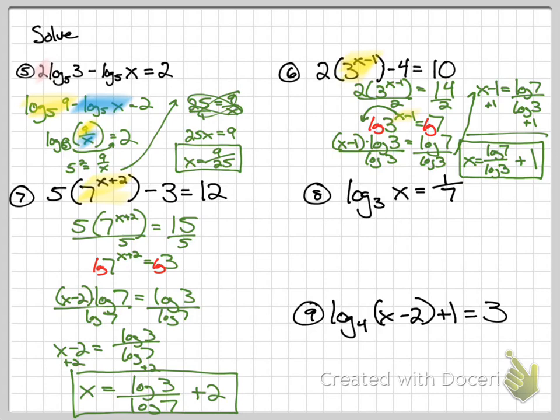Number 8. Rewrite it as an exponent. 3 to the 1 7th equals x. You'll notice x is already by itself, but what we really want to know is that you understand what a 1 7th power is. So what we're looking for is 7th root of 3. A fraction as a power is a root. So notice 7 is that number, 7 is the little number on the root.